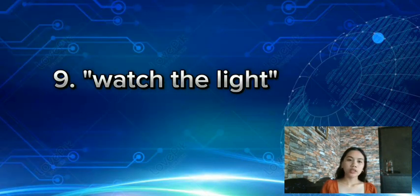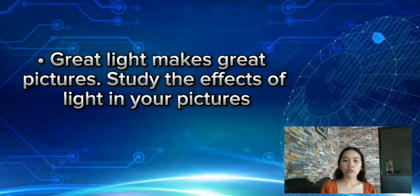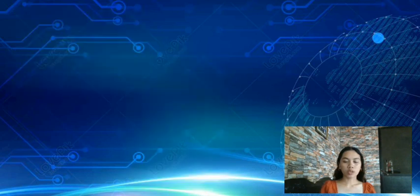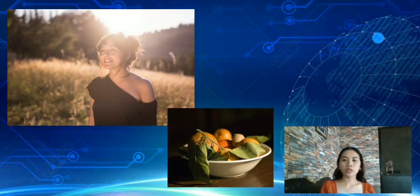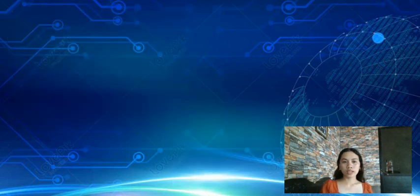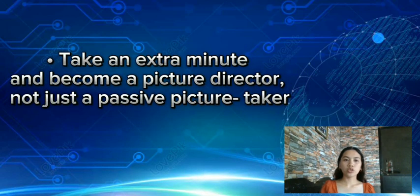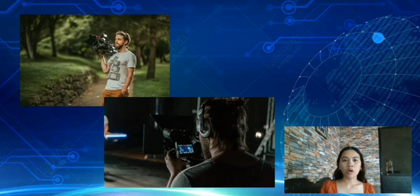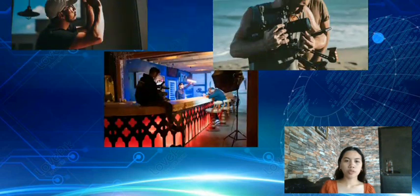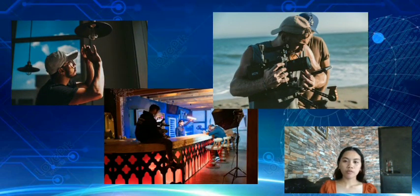Tip 9: Watch the light. Next to the subject, the most important part of every picture is the light — it affects the appearance of everything you photograph. Bright sunlight from the side can enhance wrinkles on a person, but the soft light of a cloudy day can subdue those same wrinkles. Tip 10: Be a picture director. Take control of your picture taking and watch your pictures dramatically improve. Take charge of your pictures and win your own best picture awards.